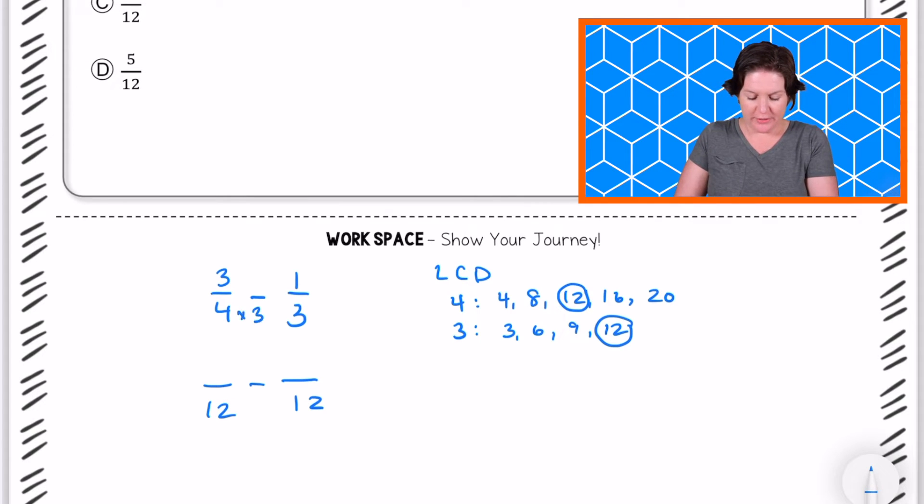If we multiply four times three, that gives us twelve. Same on the bottom, same on the top. Three times three equals what? Nine. So that would be nine twelfths.